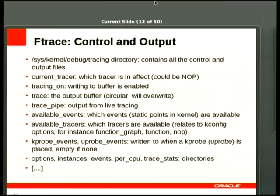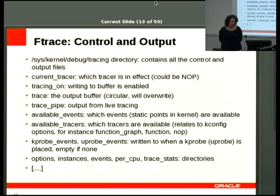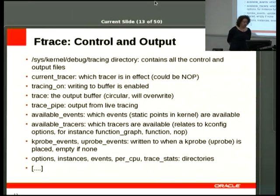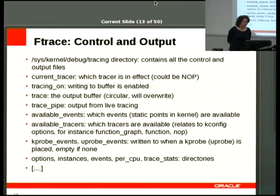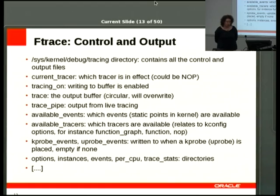To control ftrace, look at the debugfs tracing directory. Key files include: 'current_tracer' — which tracer is in effect; 'tracing_on' — turn tracing on or off; 'trace' — the output buffer where collected data is stored; 'trace_pipe' — for live tracing. There are also list files for available events and tracers, and files used to define dynamic tracing points on top of the static trace points.